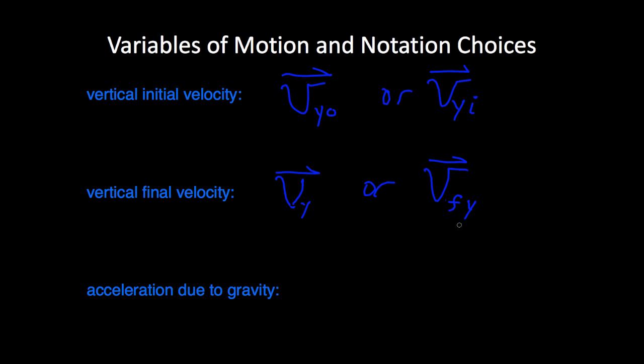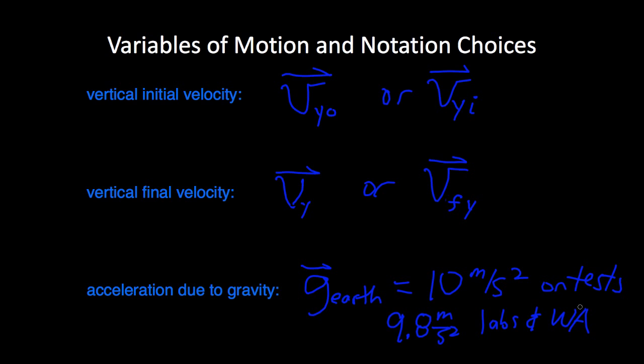For the acceleration due to gravity on Earth, we're going to use the symbol g, and you can subscript it so we know what planet we're talking about. G sub Earth is the symbol. You can have a vector symbol over it sometimes. We are going to actually use 10 meters per second squared on tests because you can. On the AP exam, you can use 10 for g. On WebAssign and labs, we're going to be using 9.8 meters per second squared. That's because all the textbook questions come pre-programmed with 9.8 meters per second squared being the acceleration of gravity. But on tests, again, you can use 10, and I highly recommend that you do because it's a lot easier.